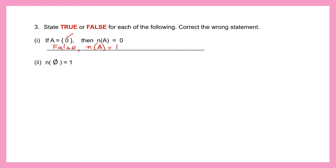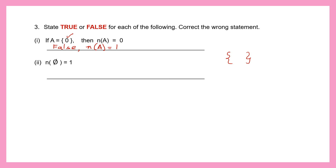Statement 2: The cardinal number of the empty set symbol (null set) is 1. That symbol stands for an empty set or null set. Is there any element inside an empty set? No. So the cardinal number of an empty set is not 1 — it is 0. This statement is also false. The correct statement is: the cardinal number of an empty set is 0.